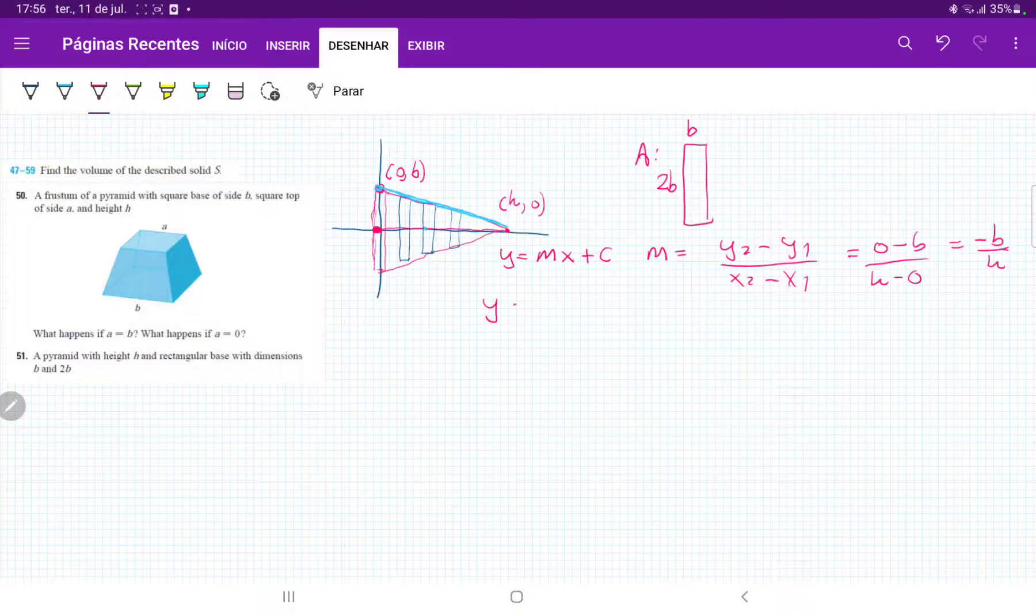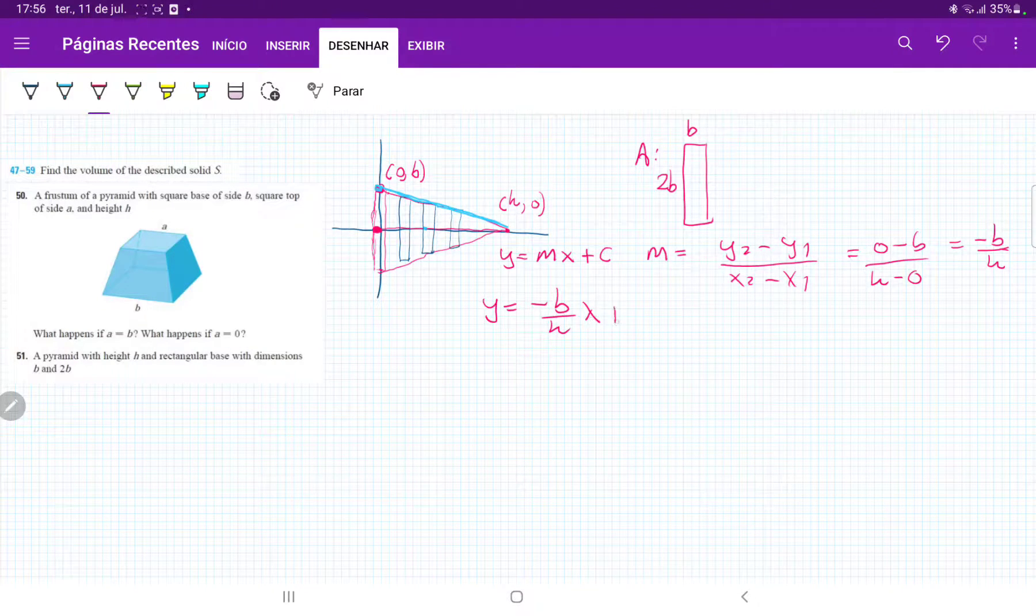So our equation is going to be y equals minus b over h times x, and then plus the y-intercept is just this point on the y that crosses the y-axis, so that's just b.